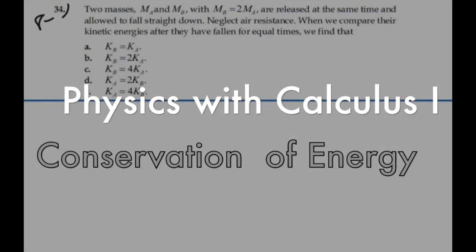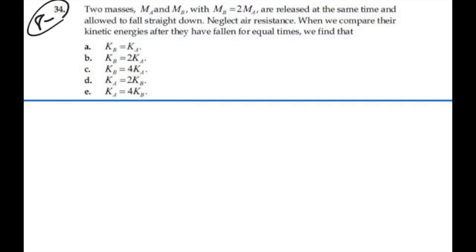Here's problem 834. Two masses MA and MB with MB equal to twice MA are released at the same time and allowed to fall straight down. Neglect air resistance.